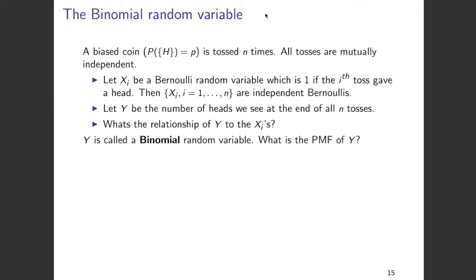y is the binomial random variable that we are going to study in this video. So what is the PMF of y? Let us first consider the different values that y can take. y can take the value 0 when there are no heads. The probability that each toss results in a tail is 1 minus p, and there are n such tosses. So the total probability that there will be no heads is (1 minus p) raised to the power of n. The reason we can do this is that all the coin tosses are mutually independent.